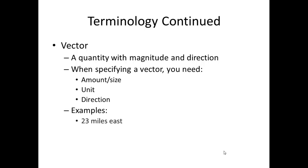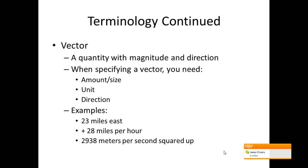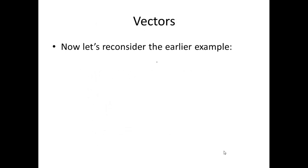Some examples: 23 miles east, 28 miles per hour, plus 2938 meters per second squared up. Now in this case, it's 22,938 meters per second squared in the direction up.